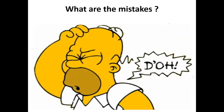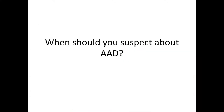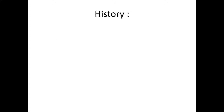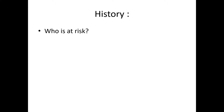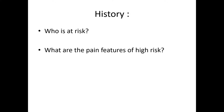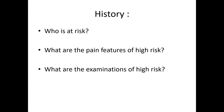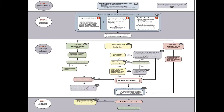So what mistake happened in the first case scenario? When should you suspect acute aortic dissection? From the history, we need to know who is at risk, what are the high-risk pain features, and what are the high-risk examination findings. This is the algorithm I will discuss separately.